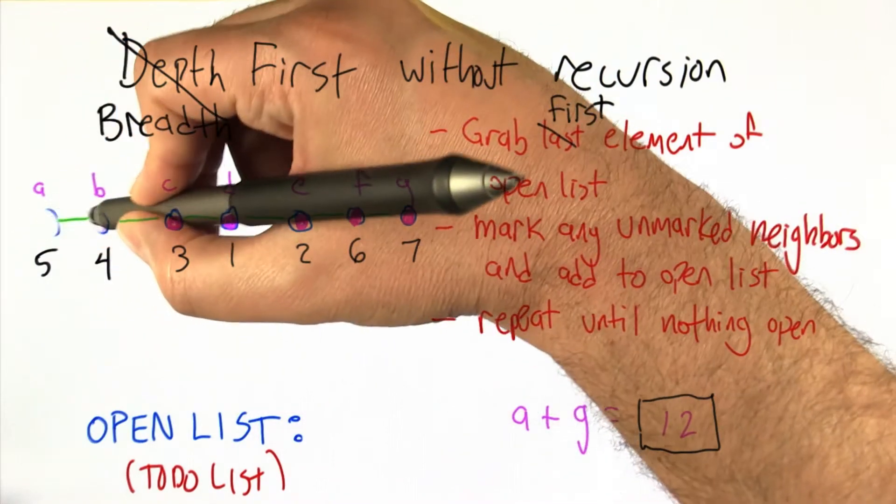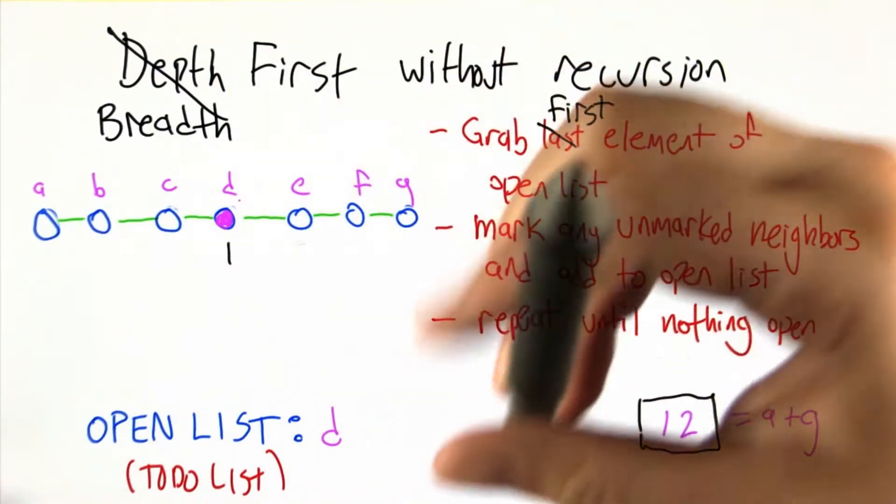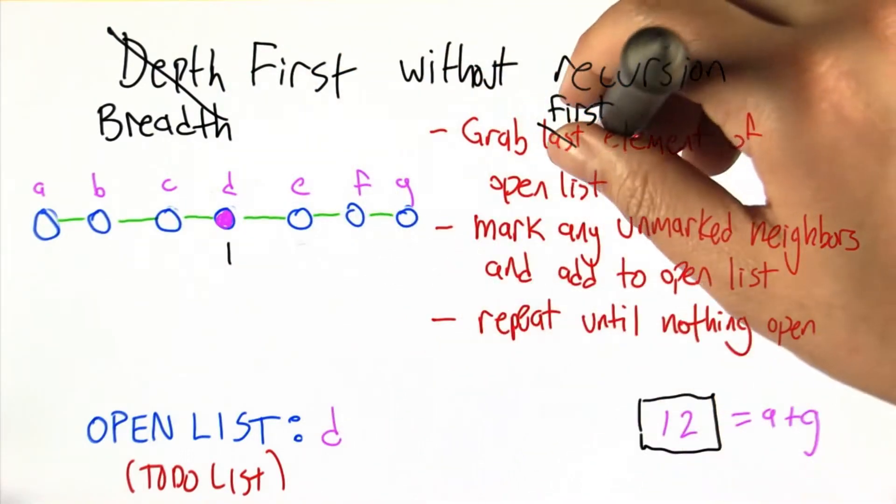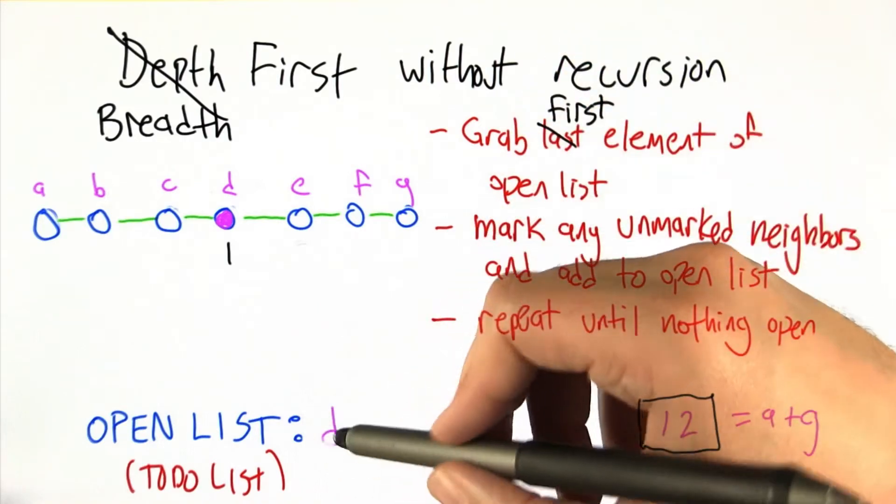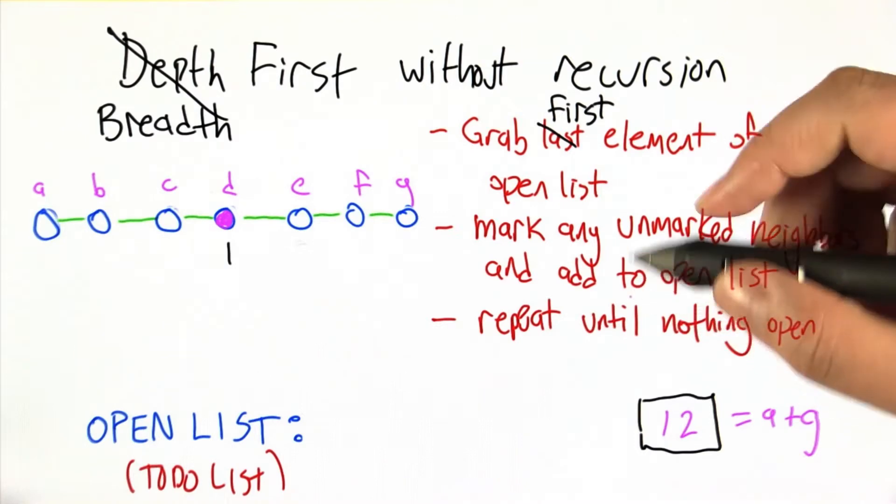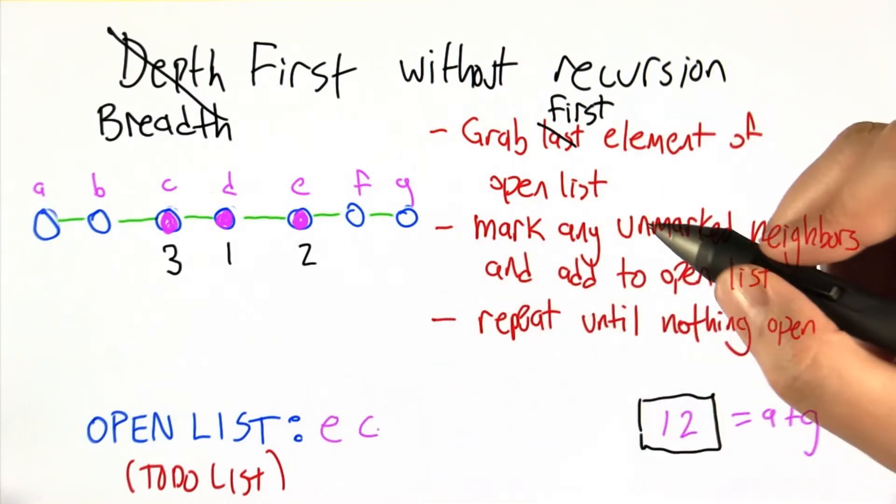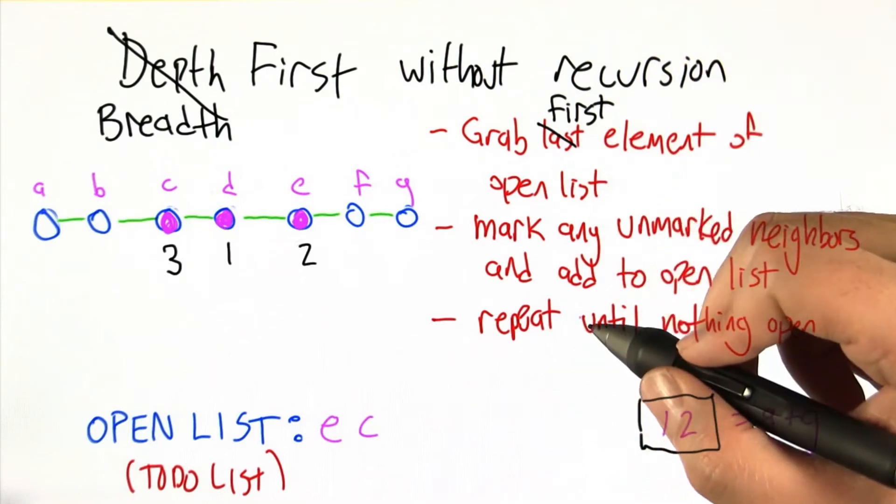So we start off with D as the first thing added to the list and D on the open list. And now what we do is, the first and the last element are the same, so nothing changed yet. So we grab D off, we mark any unmarked neighbors of that node of D, which in this case are E and C, just as before. And that's done for this time through.